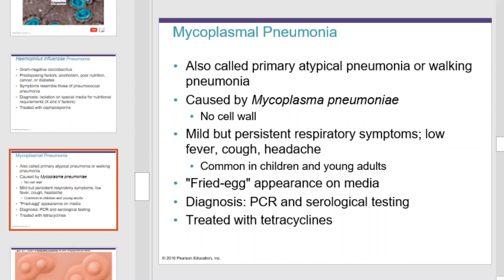Mycoplasmal pneumonia, also called primary atypical pneumonia or walking pneumonia, is caused by Mycoplasma pneumoniae, which has no cell wall. It is mild but persistent — mild respiratory symptoms may go on for months and include a low fever, cough, and headache. It is common in children and young adults. Diagnosis is done using PCR and serological testing, and it can be treated with tetracyclines.